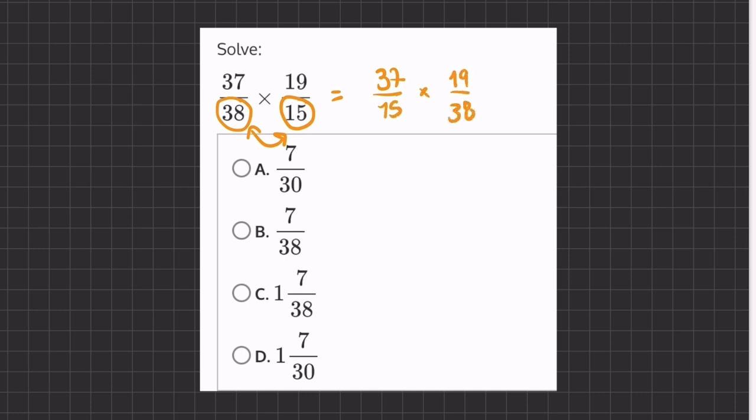This 19 over 38 can be divisible by 19, meaning that if we divide, we will get 1 half. Now, multiplying 37 over 15 times 1 half is a lot simpler than 19 over 38.